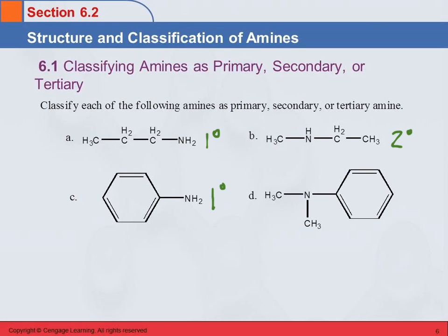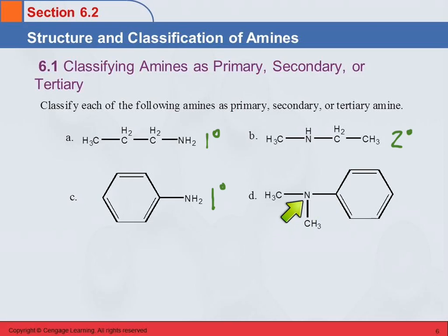And the last example? Tertiary. On a tertiary amine, there are no hydrogens on the nitrogen — all of the hydrogens have been replaced by carbon-containing groups. So this one is tertiary.